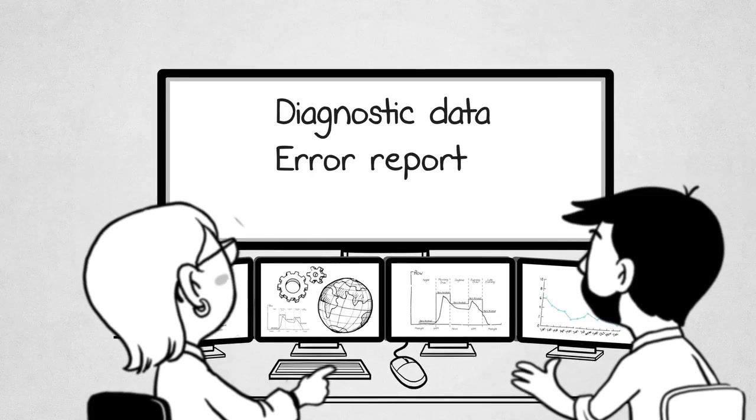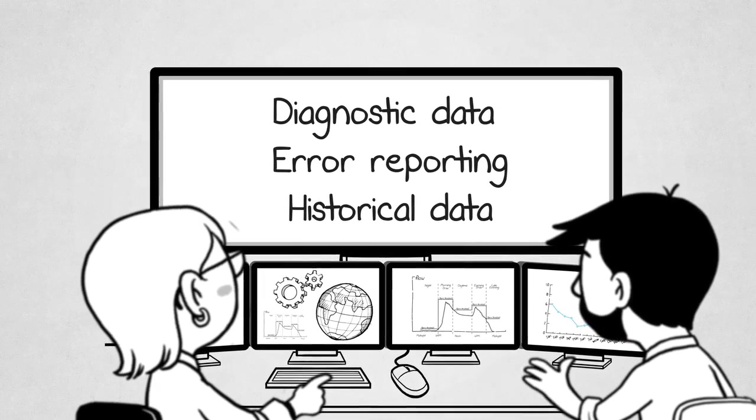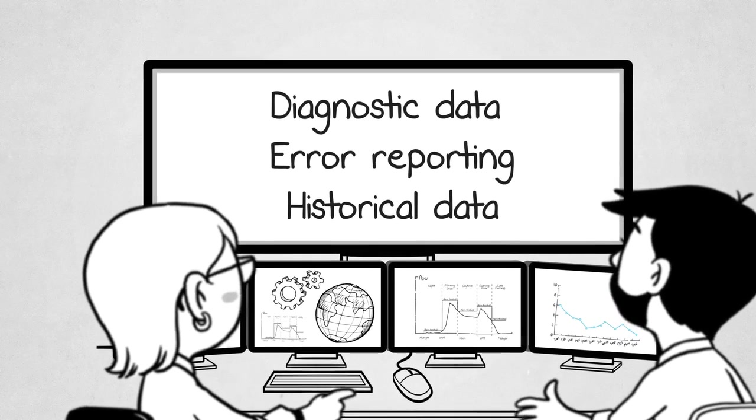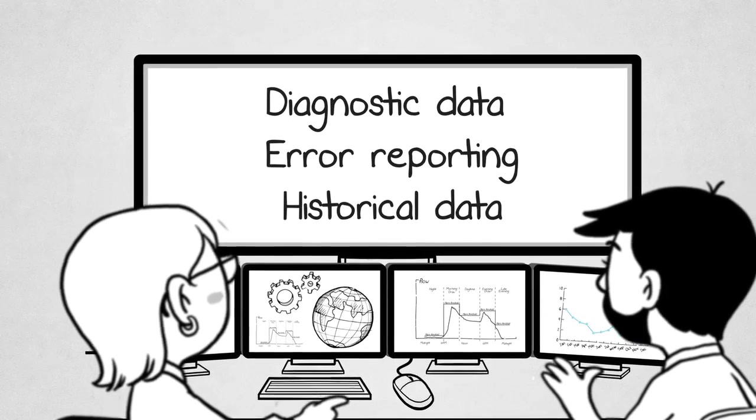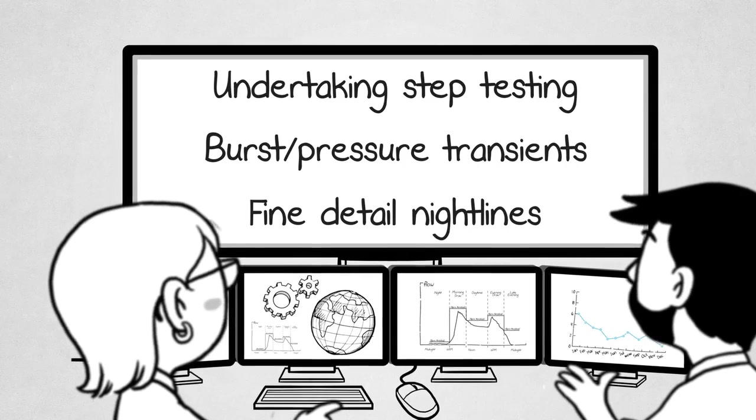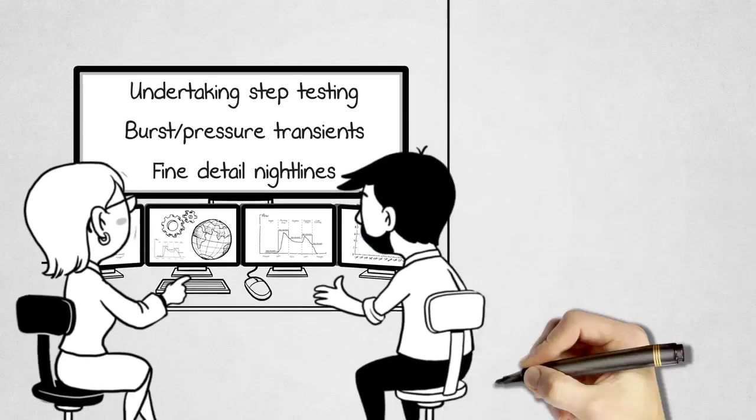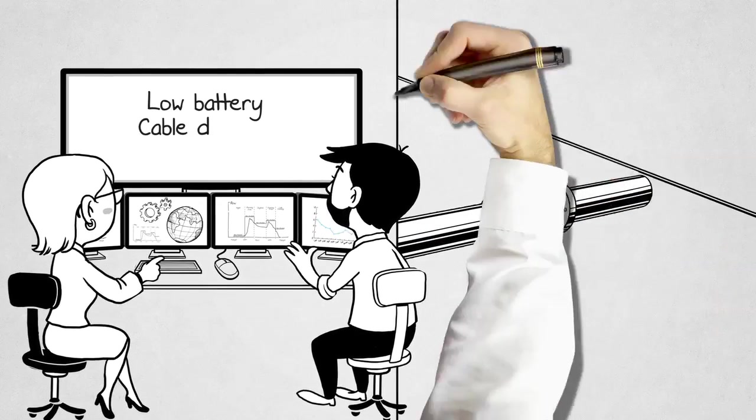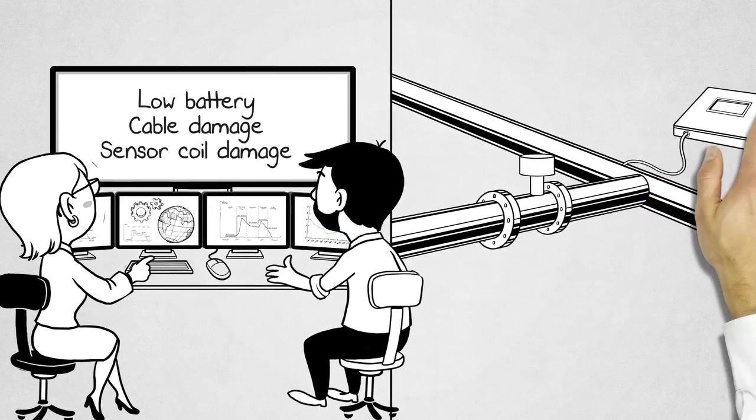The Aquamaster 3 with WITS enables you to download, as required, a high-speed, high-resolution log to investigate water network anomalies such as undertaking step testing, burst pressure transients, or fine detail nightlines. Moreover, any power management issues, sensor coil damage, or damage to the sensor cable can be quickly identified.